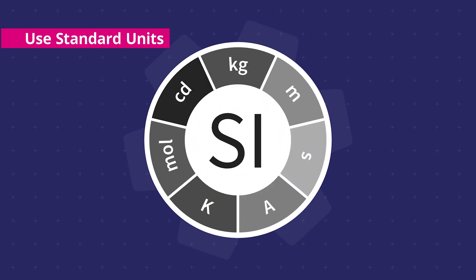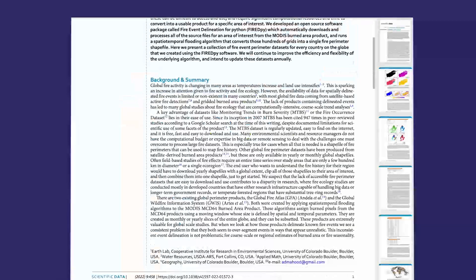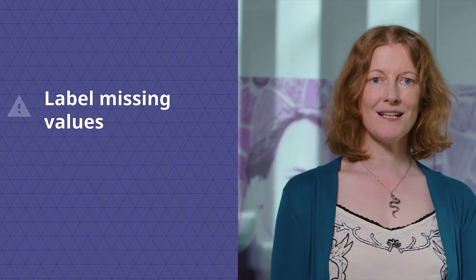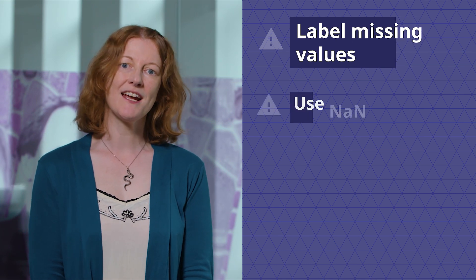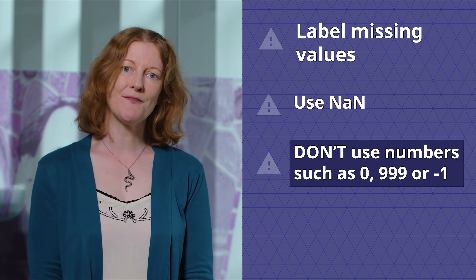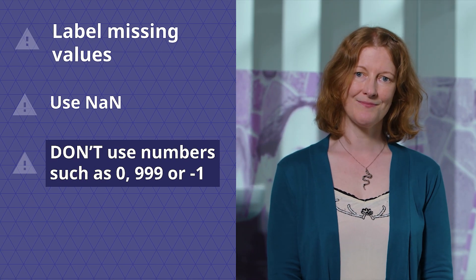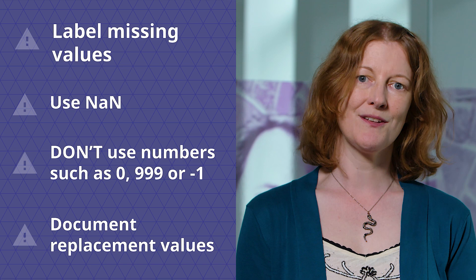The units for each variable should be clearly labelled in the international system of units where possible. Data descriptors, otherwise known as data dictionaries, should be provided with the dataset so that users know exactly what each variable represents. You should also make sure that missing values, especially in tabular data, are clearly labelled. This is usually done using the string NaN, which means 'not a number'. Do not use a replacement value such as 0, 999 or minus 1 if it could be mistaken for actual data, and make sure that you document what replacement values you use even if this seems obvious to you at the time.